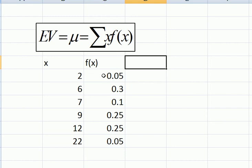What we do is multiply each x by its probability and add them up. That's what that sigma means.